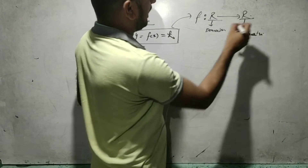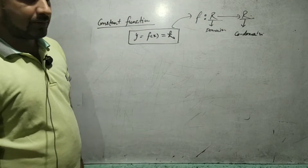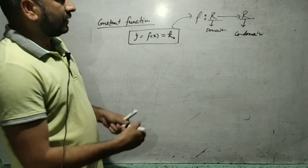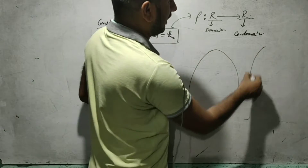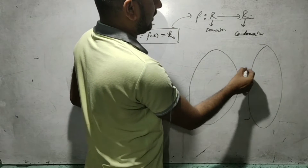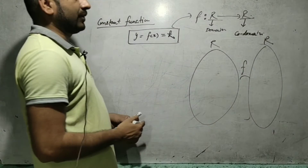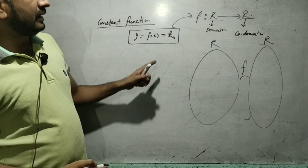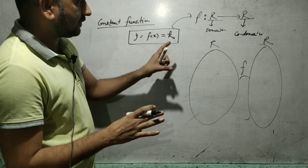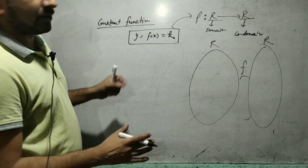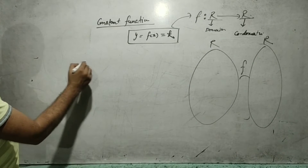Without a graph, you can explain the function using a set. The function is defined from f such that real number to real number. I will explain this function with both methods: by rule and also by graph.